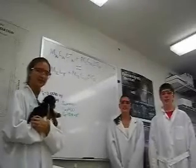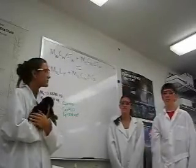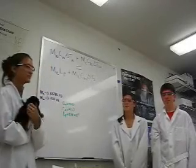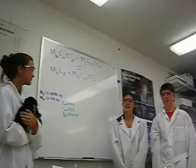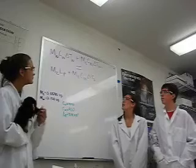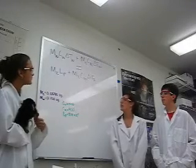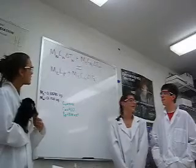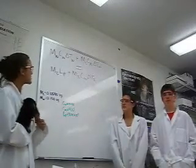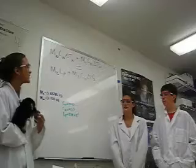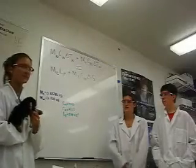Once you record all your data for the experiment, you plug it into this equation to solve for latent heat of fusion. First, you take the mass of the water and multiply that by the specific heat of water, which is 4,190, and then multiply that by the change in temperature of the water. Then you add the product of the mass of the cup times the specific heat of aluminum, which is 900, and the change in temperature of the water. That equals the mass of the ice times the latent heat of fusion plus the mass of the ice times the specific heat of water times the change in temperature of the ice.